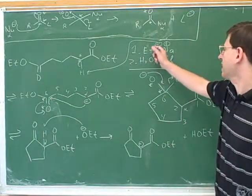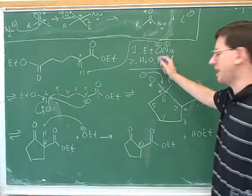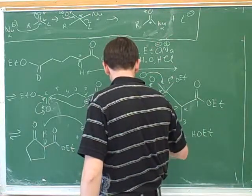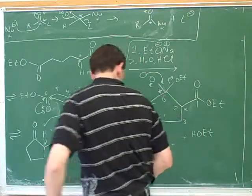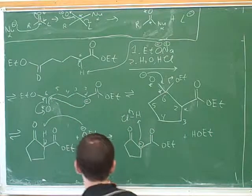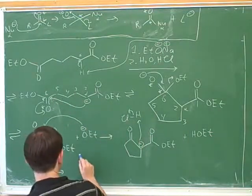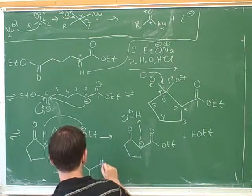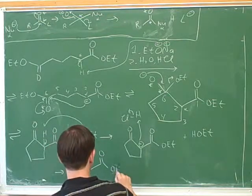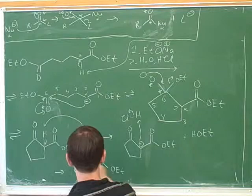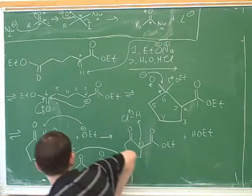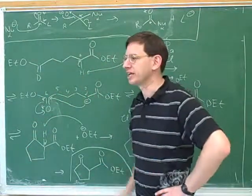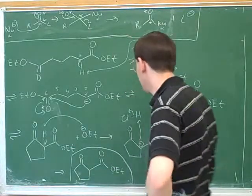Now we've finally done everything that can happen from step one, and now the chemist has to add the step two reagents. And again, we get a beta carbonyl ester. It just so happens that there's a ring involved, and so you have a 1,3-dicarbonyl.